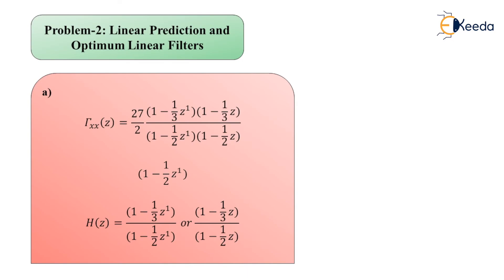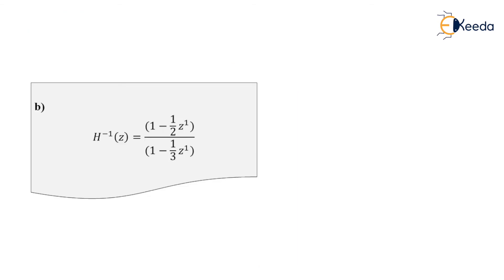For Part B, we must invert the minimum phase filter H(Z) to obtain a stable whitening filter. The inverse is H⁻¹(Z) = (1 − (1/2)Z⁻¹) / (1 − (1/3)Z⁻¹). This completes Problem 2 on linear prediction and optimum linear filters. In the next lecture, we will cover the last problem from the same chapter. Thank you.